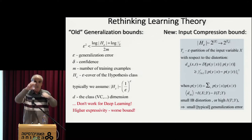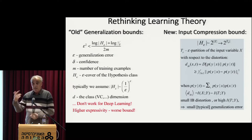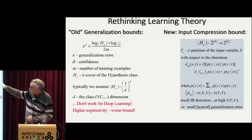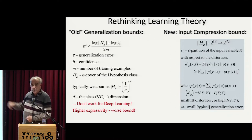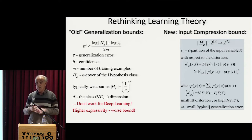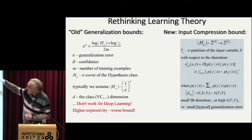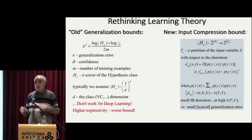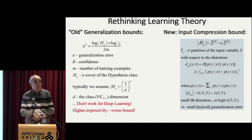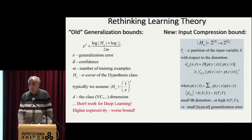You take essentially your class, your epsilon cover, and then you learn this finite cover. You have a cardinality bound — it's the log of the cardinality of the cover divided by M. If the cover scales like one over epsilon to the D, as we expect from finite-dimensional objects, you get this nice D log one-over-epsilon over M. So D over M is going to be the dominant factor in learning. As long as the number of examples is smaller than D, you don't generalize; once it gets larger than D, you begin to generalize.